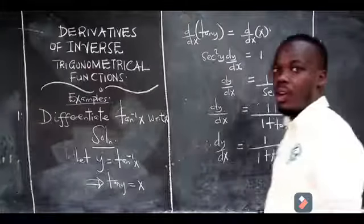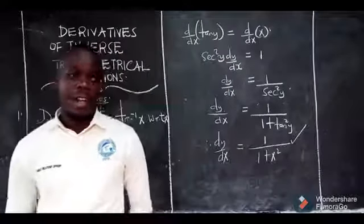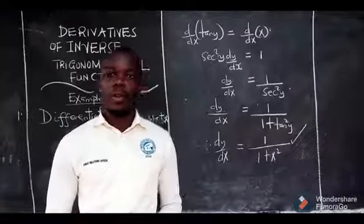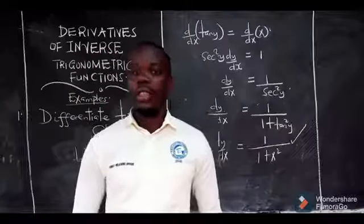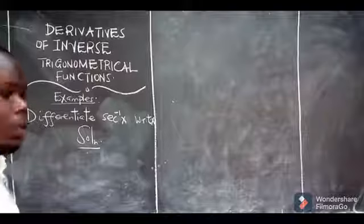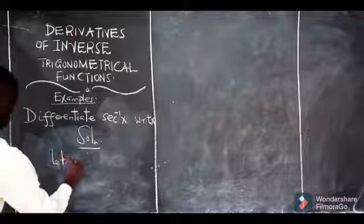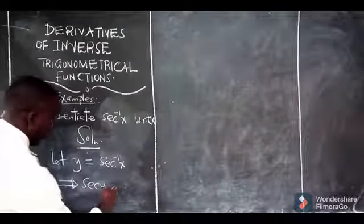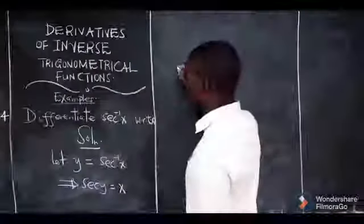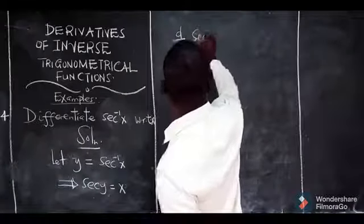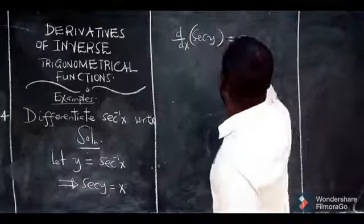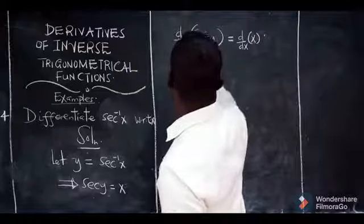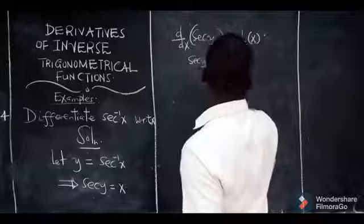And this becomes the derivative of tan inverse of x. Now I'm going to do one of the other derivatives — for example, sec inverse. For sec inverse of x, we shall still let y equal to sec inverse of x. Then we take the derivative on both sides with respect to x. We shall say: derivative with respect to x of sec(y) equals derivative with respect to x of x. When you differentiate sec(y), we shall get sec(y)·tan(y)·dy/dx, all equal to 1.